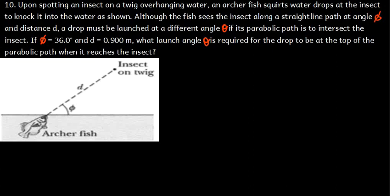Upon spotting an insect on a twig overhanging water, an archer fish squirts water drops at the insect to knock it into the water as shown below. Although the fish sees the insect along a straight path at angle phi and distance d, a drop must be launched at a different angle theta.